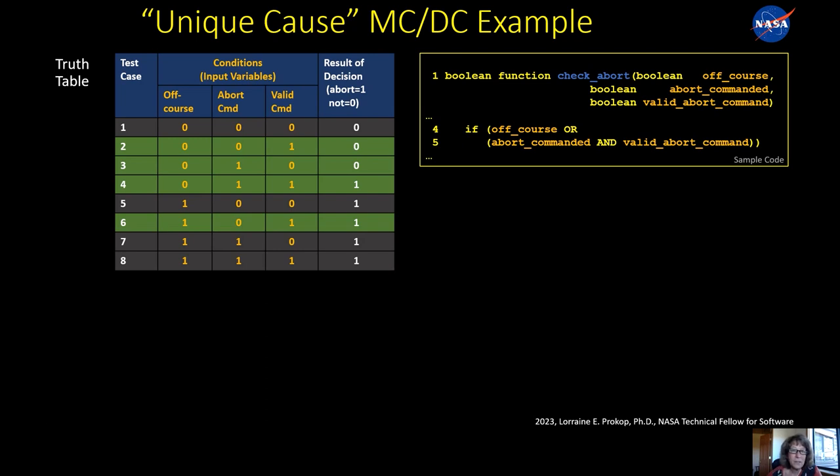The first form of MCDC that I'm going to review is called unique cause. And what I'm starting to show here, first I want to draw your attention to the code. From here on out, the only part of the code we're really going to be talking about is the section on this decision with the three conditions, because that's sort of what you focus on for MCDC. Make sure you test the combinations of this to cover all the meaningful possibilities.